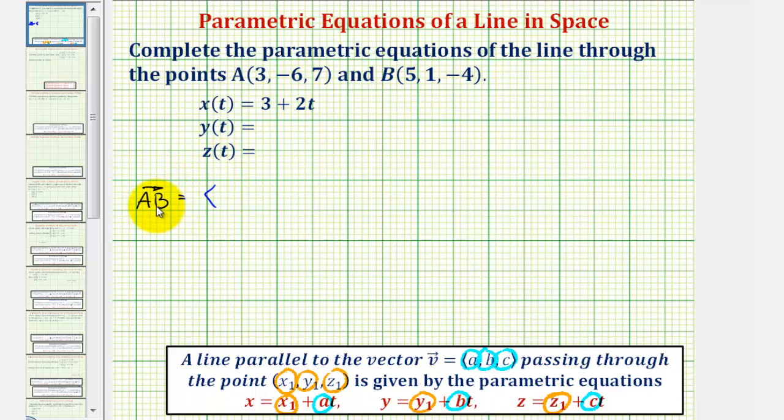The x component of vector AB would be 5 minus 3. The y component would be 1 minus negative 6. And the z component would be negative 4 minus 7.